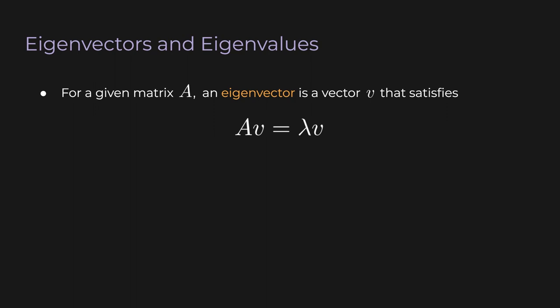The prefix eigen means self, so we put in a vector and what we get back out is itself. The scalar is called an eigenvalue, so each eigenvector has an eigenvalue associated with it.